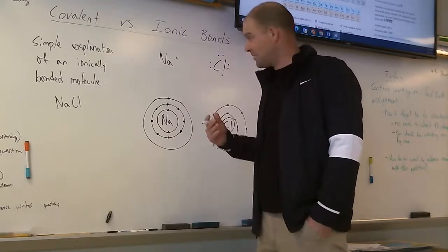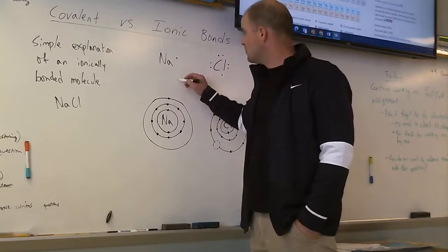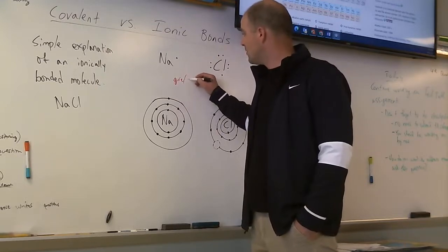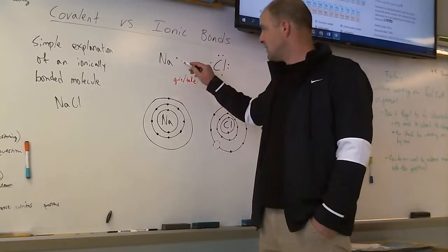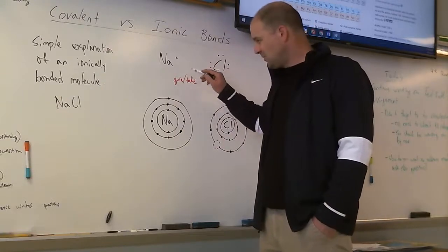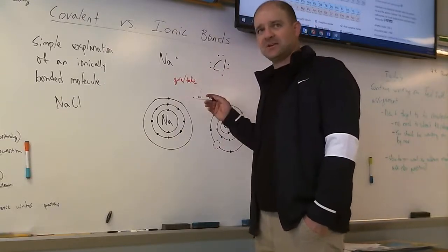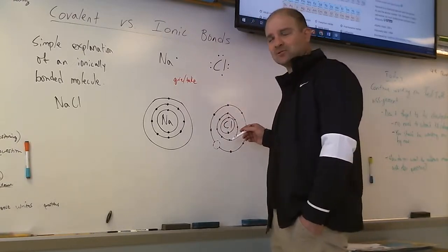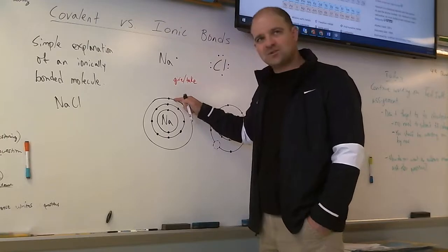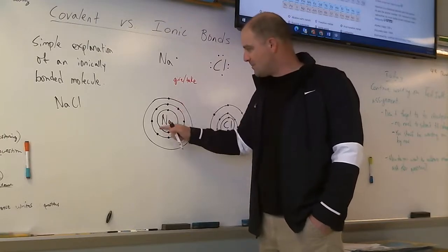So in this case we see sodium with one electron hanging out in the valence shell and chlorine just needing one more to have a full shell. So if sodium loses this one, it'll actually be more satisfied.